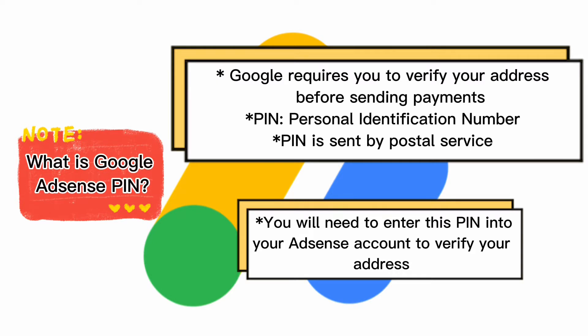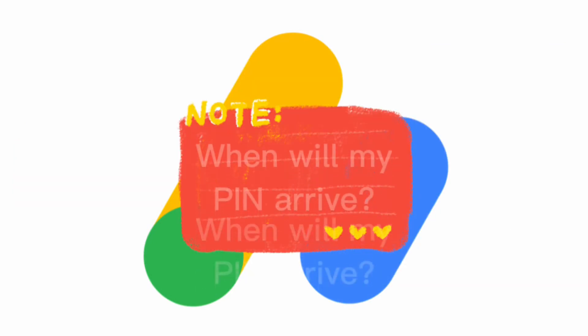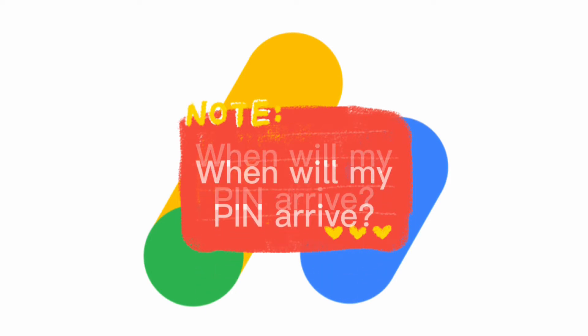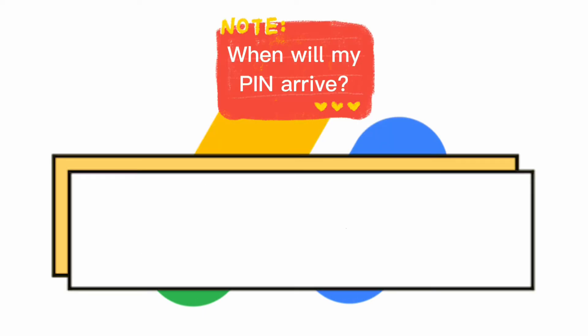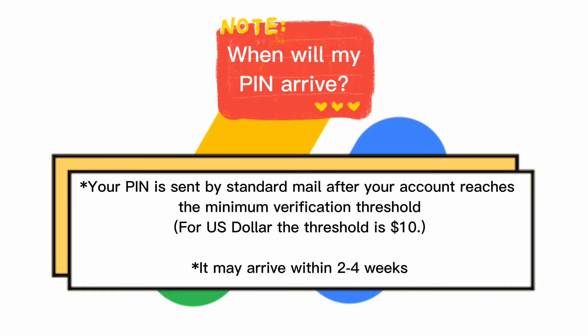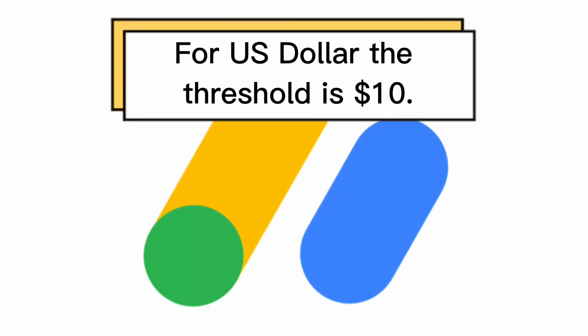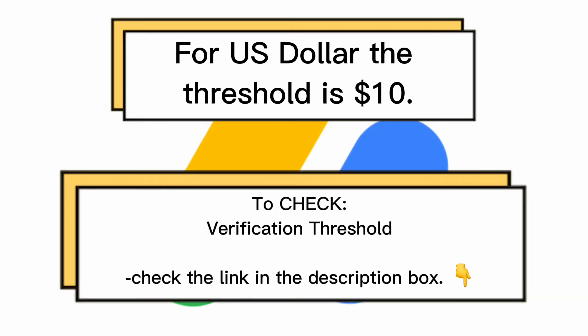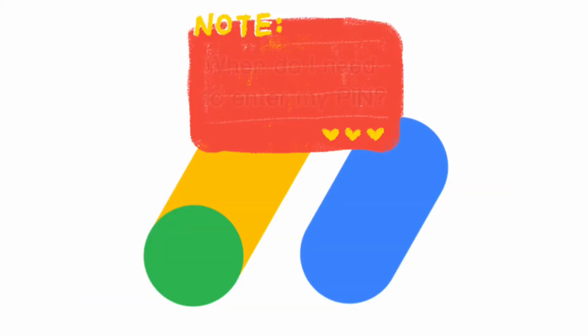When will my PIN arrive? Google AdSense will print and send the PIN by standard mail several days after your account balance reaches the verification threshold for the first time. Pins typically arrive within two to four weeks, but may take longer depending on the postal service in your country. For US dollars, the threshold is $10. You can check the verification thresholds using the provided link.